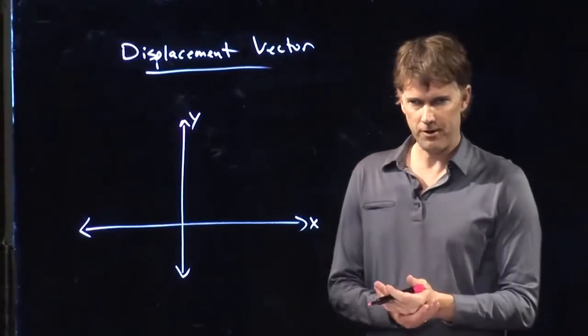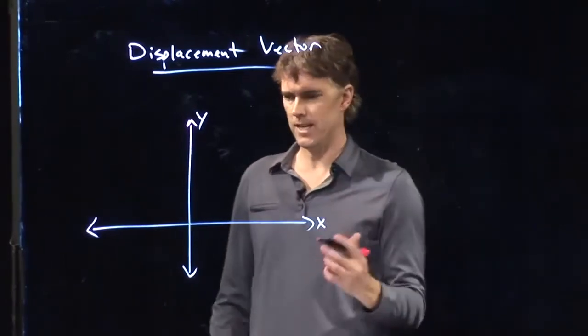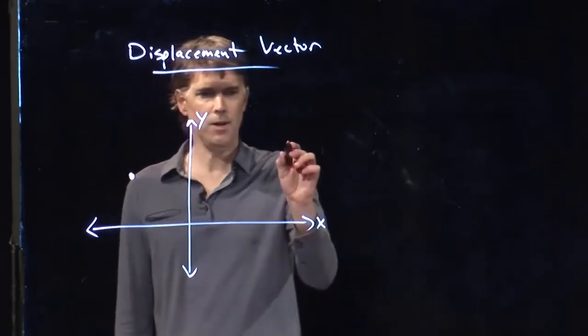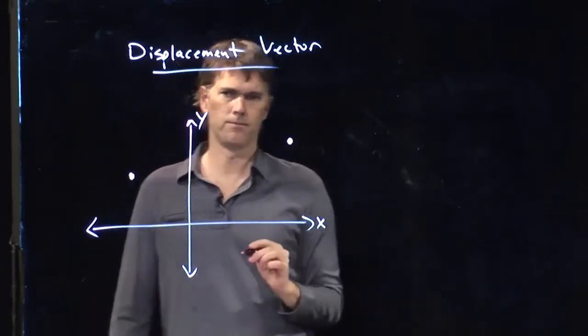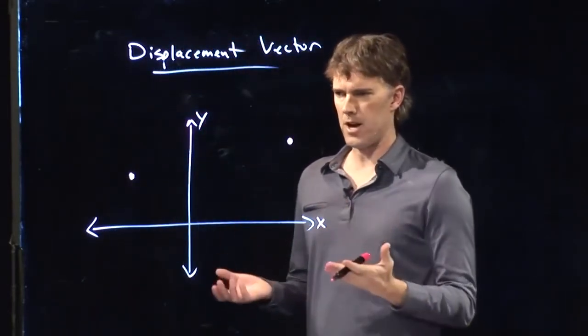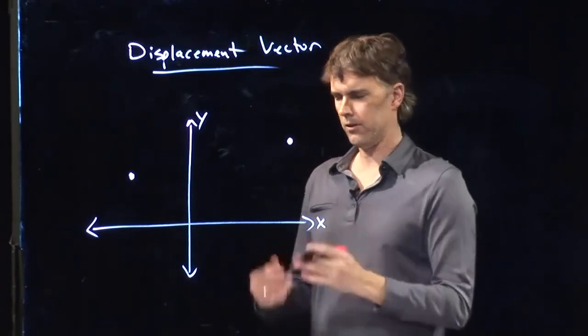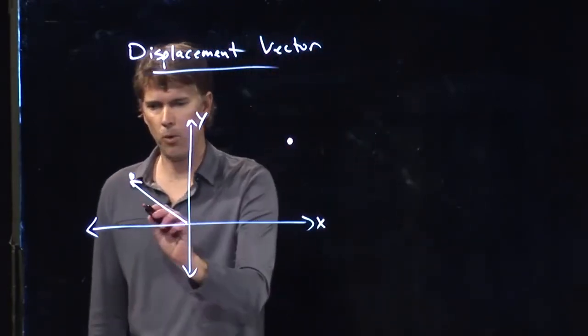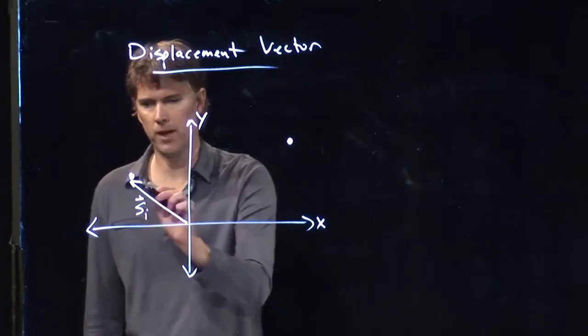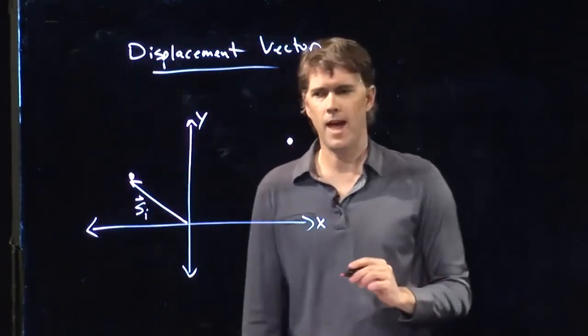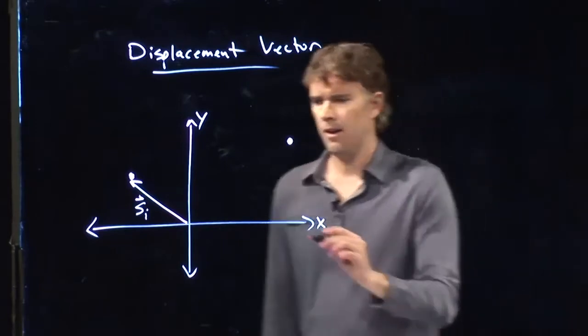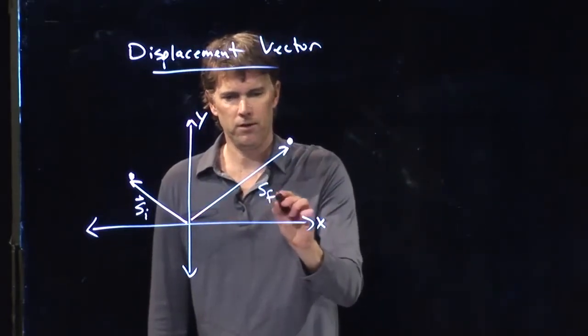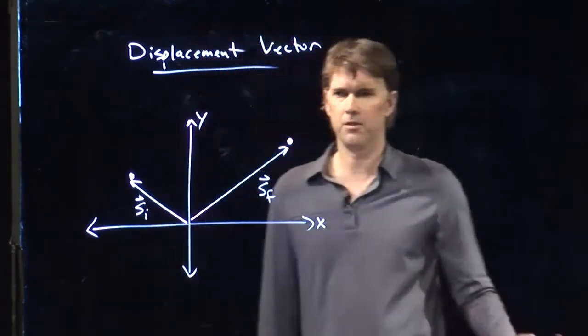We need to know where you started and where you ended. So let's say you started there and you ended right there. How would I define those positions in this coordinate space? The vector from the origin to your initial location is S sub i. The vector from the origin to your final location is S sub f.